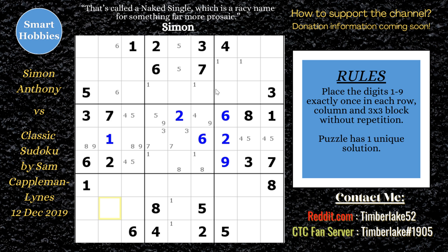Simon moves back to column seven — he still needs a one, three, seven, and eight. He notices the eights are restricted on top and marks those in. Then he marks row seven, column seven as only a three or seven. But then he also notices there are a lot of digits in row nine and a lot in column nine — different digits: one, three, seven, eight in one and two, four, six, five in the other. He noticed this mismatch of digits and was able to solve a cell in block nine.